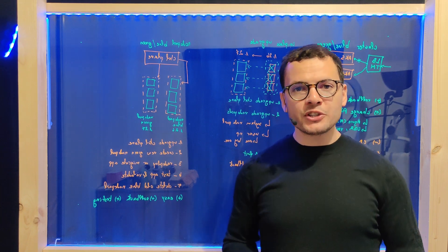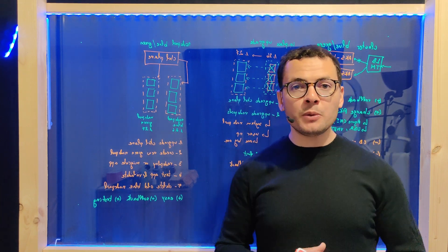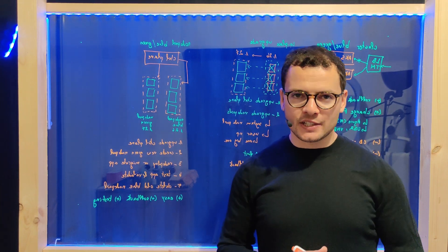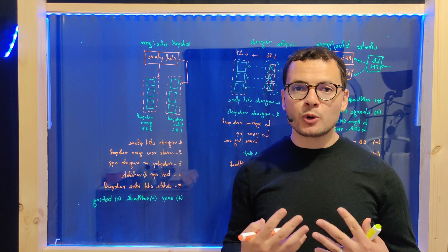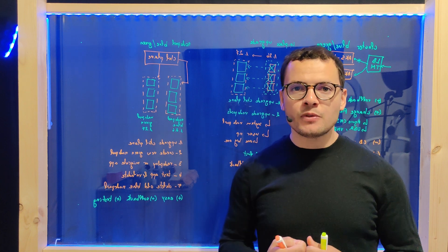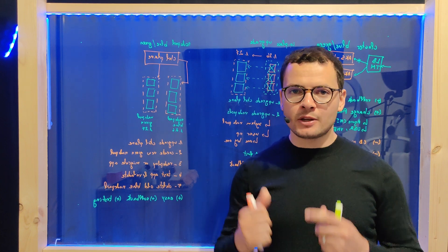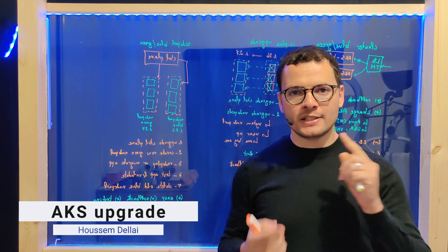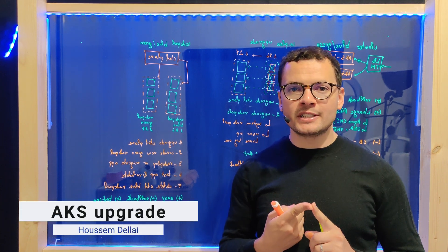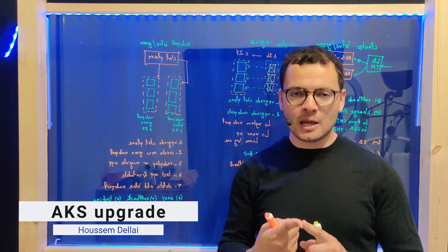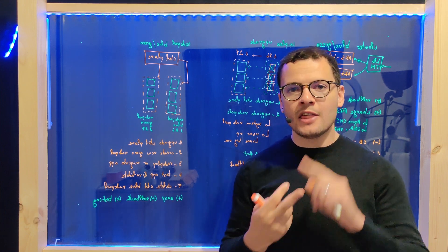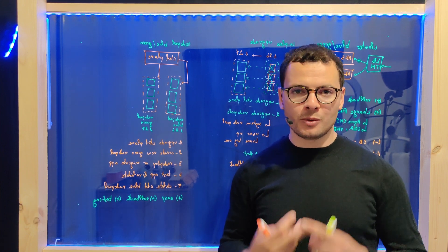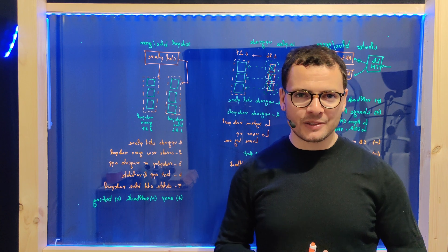In this lightboard session, we'll learn about the different options to upgrade an AKS cluster. We'll explore three options: first is the cluster blue-green upgrade, second is the cluster in-place upgrade, and third is the node pool blue-green upgrade.